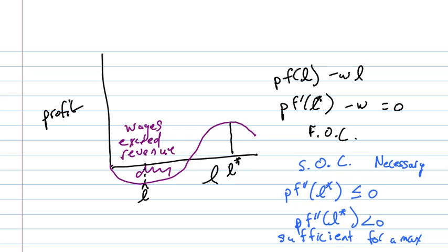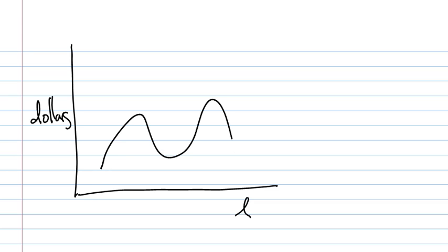Now let's look again at one more graph. Here's L and this is dollars again. Suppose our profit function looked like this—suppose it had many peaks and many valleys and you want to figure out the absolute max. The conditions we just looked at would identify this point, this point, and this point. All of them are local maxes, and the conditions we just looked at are just local conditions.